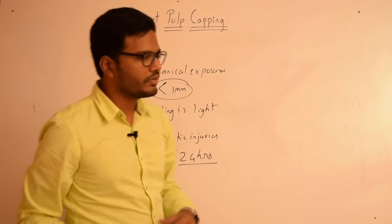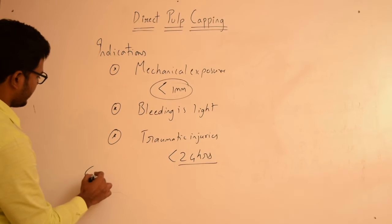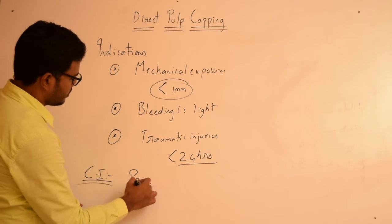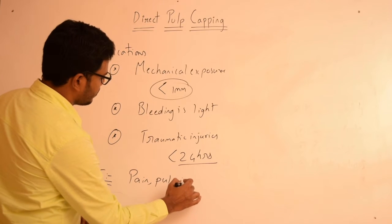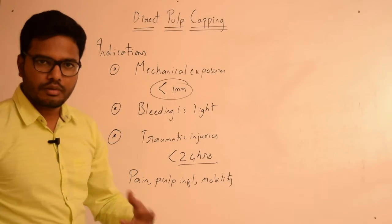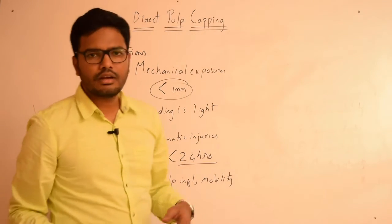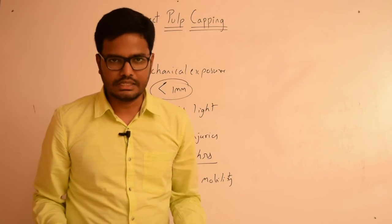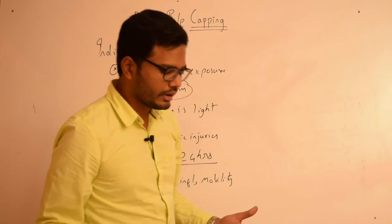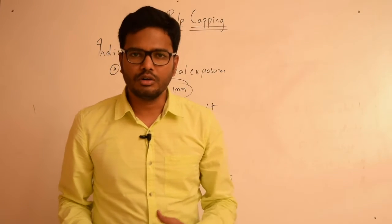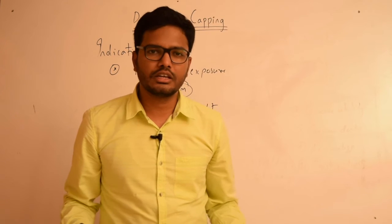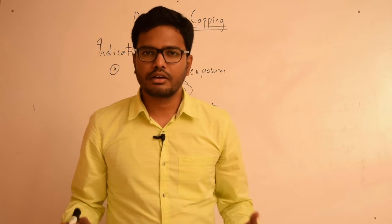There are many cases where direct pulp capping is contraindicated. It is contraindicated when there is pain, pulpal inflammation, mobility of the tooth, thickening of the PDL as observed in a radiograph, or any intra-radicular radiolucencies, furcation involvements, or periapical radiolucencies. Most importantly, direct pulp capping is not indicated in primary teeth because of poorer prognosis — there can be inflammation, necrosis, calcifications, resorptions, or intra-radicular radiolucencies.